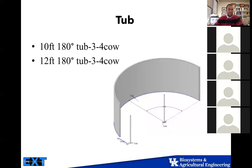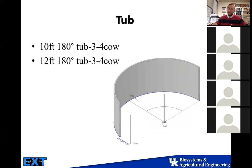Looking at our tub — whether it's a 10-foot 180-degree tub or a 12-foot — you only want to put three or four cows in there. If you put five or six or a whole bunch of animals in there, it's not going to be as effective. Put three or four in there and you get better throughput because it's easy to push those animals and they see the opening and are more likely to go out. Don't overload your tubs.